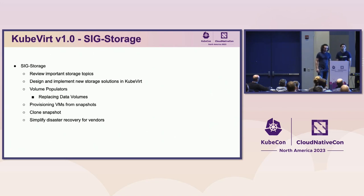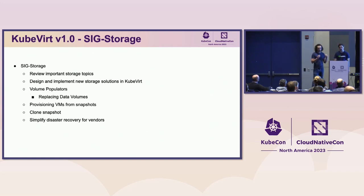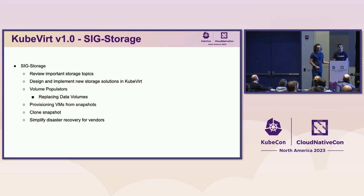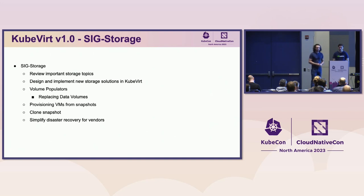The storage SIG had a lot of interesting features. One notable example is data volumes. At the beginning of KubeVirt, there was no seamless solution for managing images — how would you upload images into volumes that need to be pre-populated before starting the virtual machine? Kubernetes didn't have such a solution, so we had to develop it ourselves. But this inspired Kubernetes to design new volume populators that are useful for us and others in the ecosystem. Now we have a way forward to deprecate data volumes and use the cloud-native solution that Kubernetes provides with volume populators — again, a sign of maturity of the project.